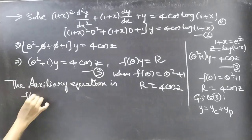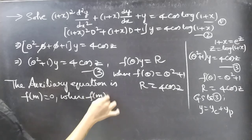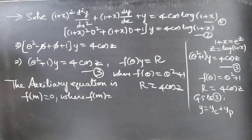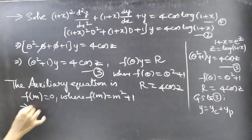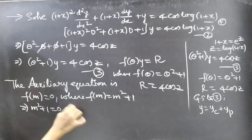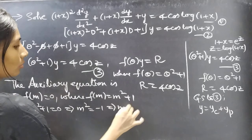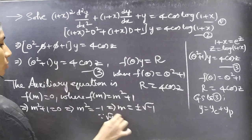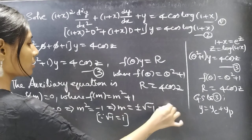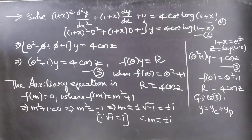The auxiliary equation is f(m) = 0. Since f(θ) = θ²+1, replacing θ by m gives f(m) = m²+1. So the auxiliary equation is m²+1 = 0, giving m² = −1, and since √(−1) = i, we get m = ±i. The roots are complex conjugates.